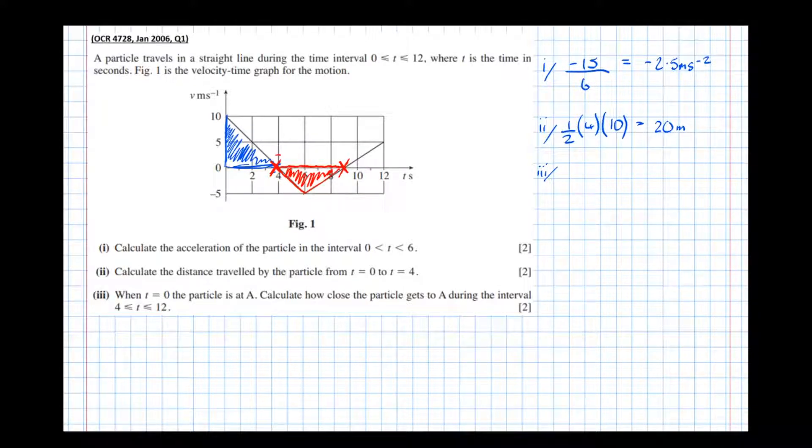If we find out the area in this region here, we'll find out how much closer it's got back towards A before it starts moving back away from A again.